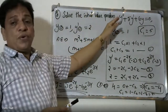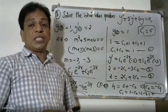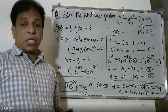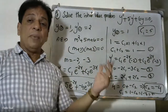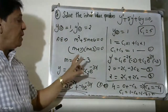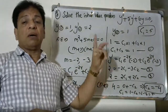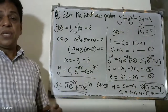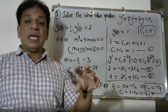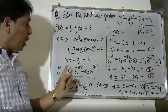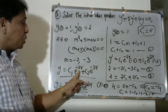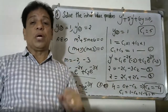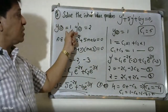To recap: we wrote the auxiliary equation. The roots from the auxiliary equation are m equals minus two and minus three, which are distinct real roots. Since the roots are distinct, we write the general solution as y equals c1 into e raised to minus two x plus c2 into e raised to minus three x, where c1 and c2 are constants to be found using the initial conditions.